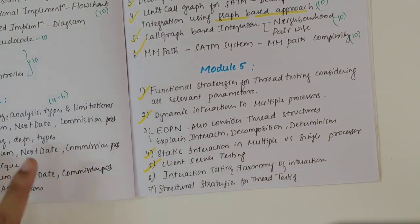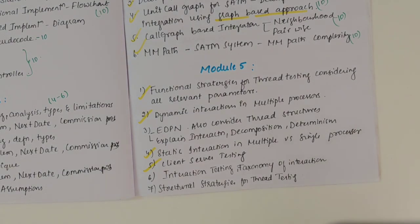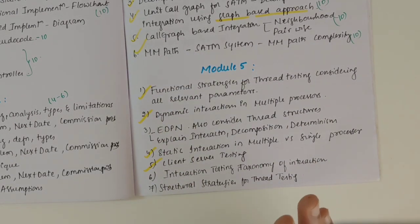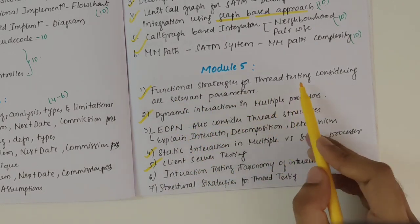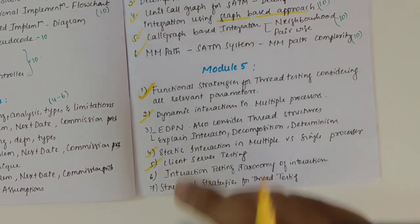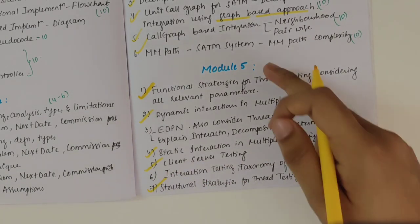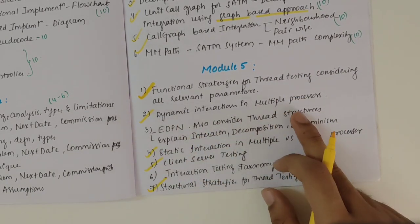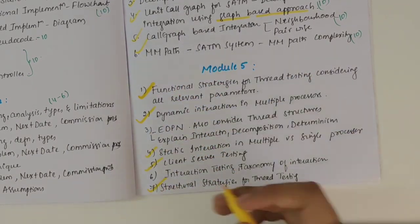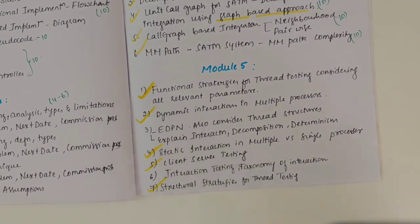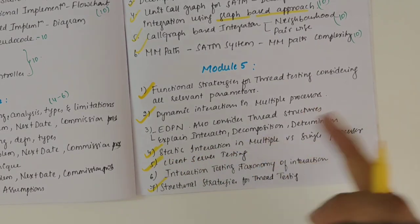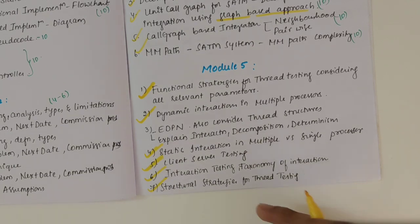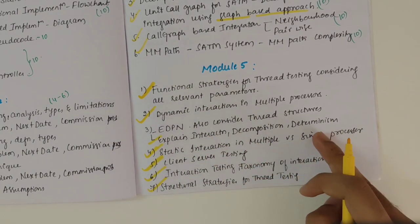Now for the fifth module, there are certain complex topics like drawing the FSM — the finite state machine diagram — for the SATM problem. Make sure you cover these seven topics first. Firstly, we have functional strategies for thread testing considering all relevant parameters, or structural strategies for thread testing such as bottom-up. One of these two could be asked for 10 marks. Then we have dynamic interactions in multiple processors — 10 marks — or static versus dynamic interactions in multiple versus single processors. Then client-server testing with a diagram.